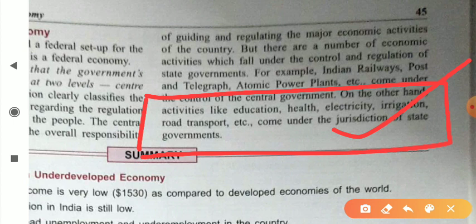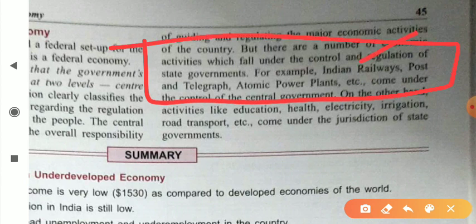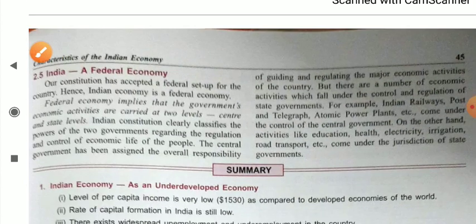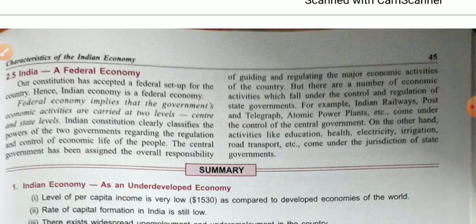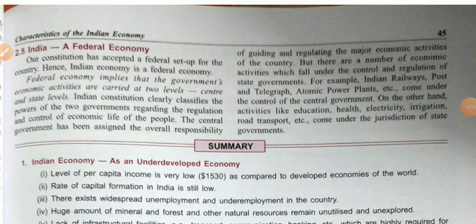State governments take decisions regarding education, health, electricity, irrigation, and road transport, while only the central government takes decisions on Indian railways, post, telegraph, and atomic power plants — these are out of the reach of state governments. Therefore, India is considered a federal economy because our constitution defines two levels — central and state — with all their duties and regulations clearly mentioned, and both levels must follow the constitution.